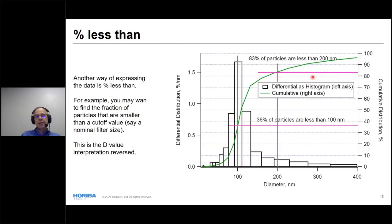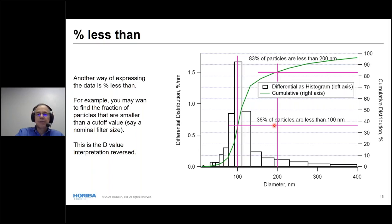You can also turn this around: if you have a process concern, say filtration, you start at a particular size on the cumulative and read off the percentage. For example, 83% of particles are less than 200 nanometers, or 36% are less than 100 nanometers. If there's a size cutoff you worry about, you look for values of 'percent less than,' and one minus that is 'percent greater than.' This is really D-value interpretation reversed.